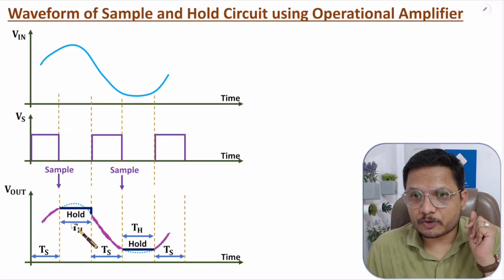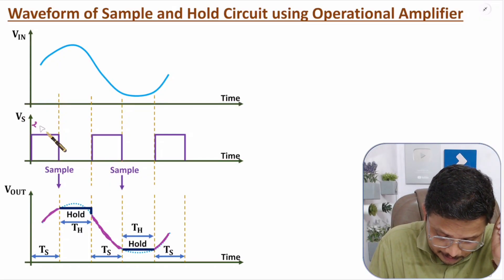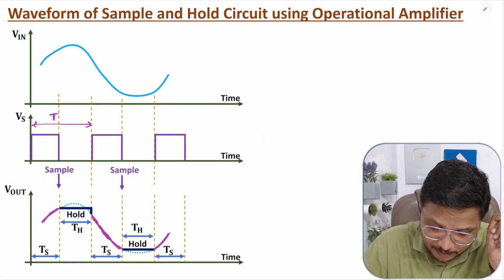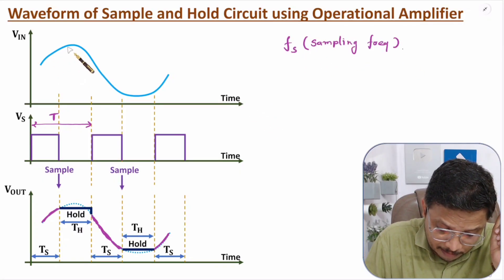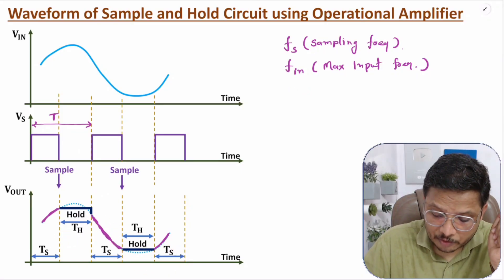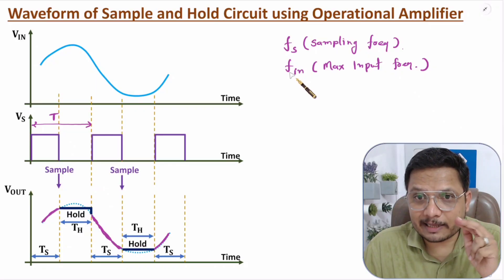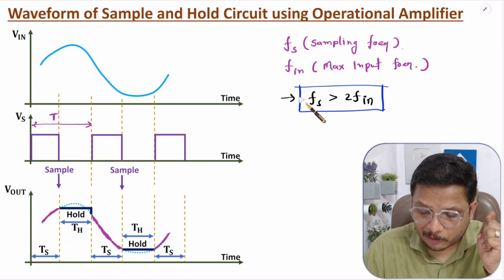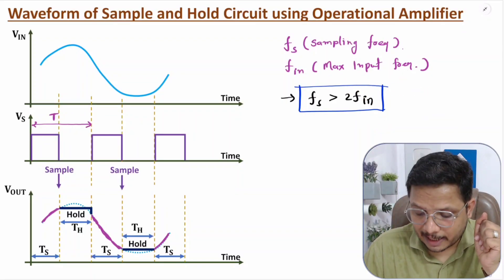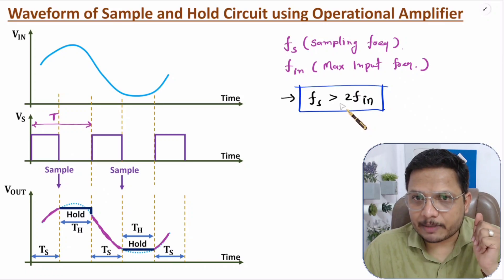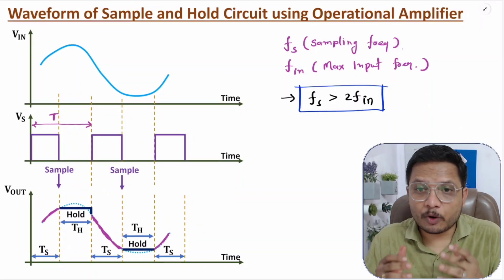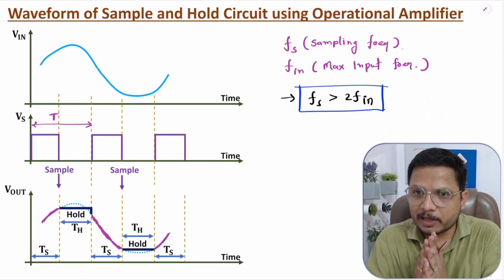There is a very essential point to understand. VS has a sampling frequency FS based on the time interval T. To have proper sampling, FS should be at least greater than twice of F_in (the maximum input frequency) — this is the Nyquist criterion. These are the basic fundamentals of the sample and hold circuit. If you have any questions, please note them in the comment section. Thank you so much for watching this video.